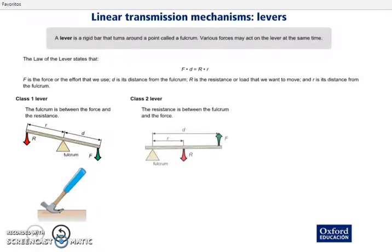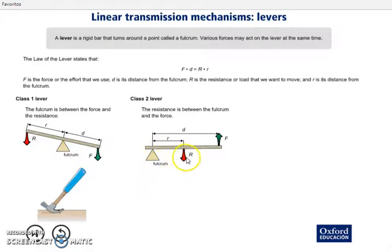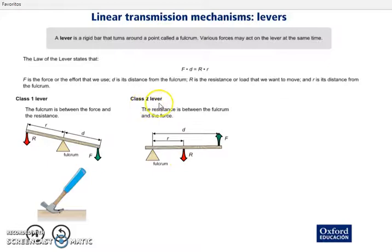Second class lever: the resistance is between the fulcrum and the force. We have the bar, the fulcrum, the resistance, and the force. The element that is in the middle is the resistance. So, this is a second class lever.